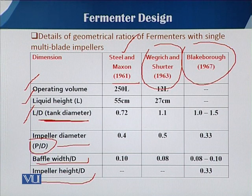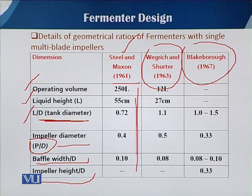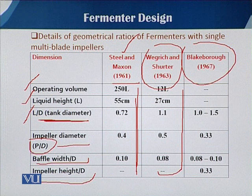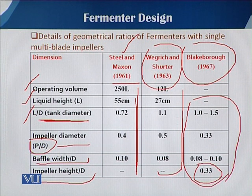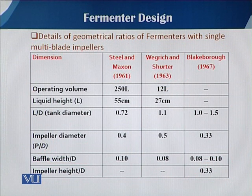For example, if we want to design a 300-litre fermenter keeping in mind the dimensions given by Steele and Maxson (1961), we can follow those ratios. Similarly, we can use Wagerich and Sherton's model. Black Barrow is especially notable because it gives the impeller height to diameter ratio, which is 0.33. By using these geometrical ratios we can design any fermenter having a single impeller.